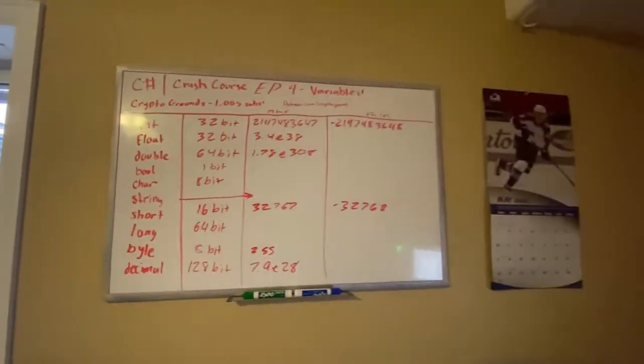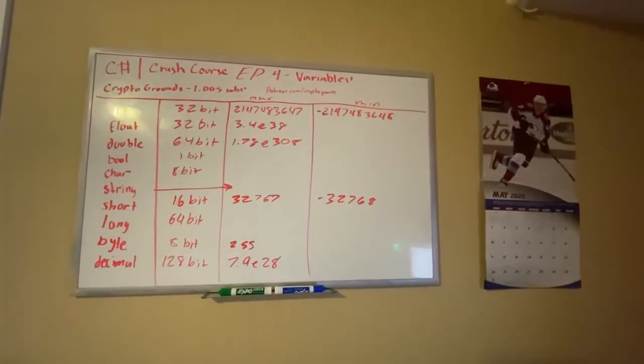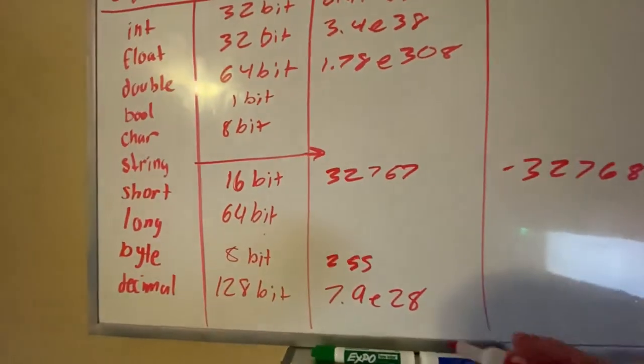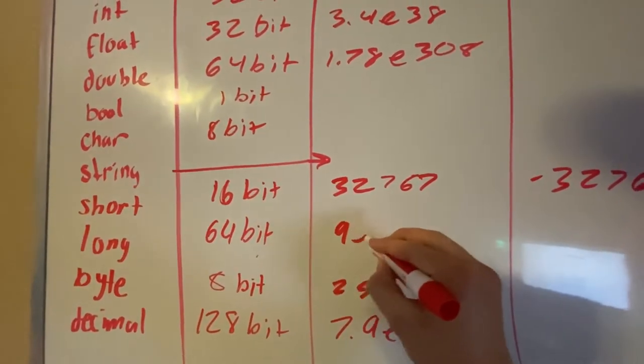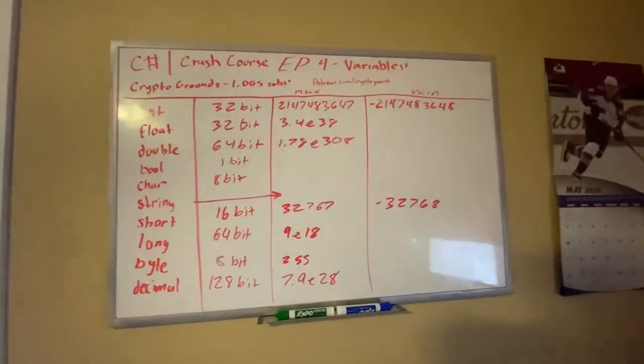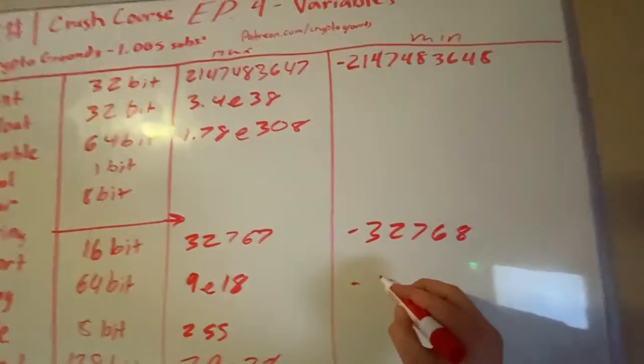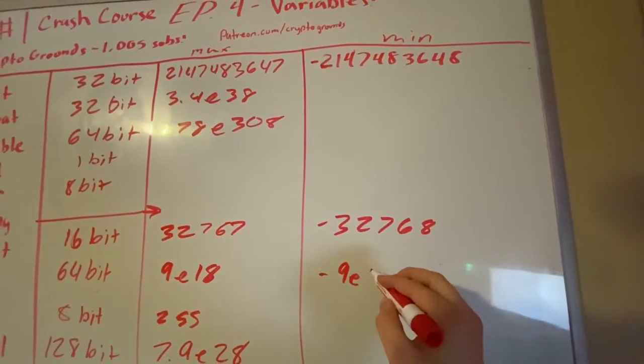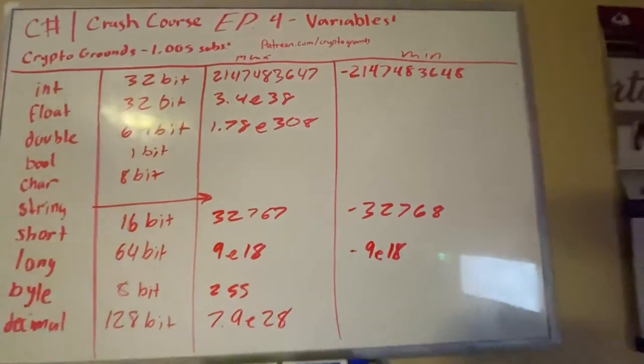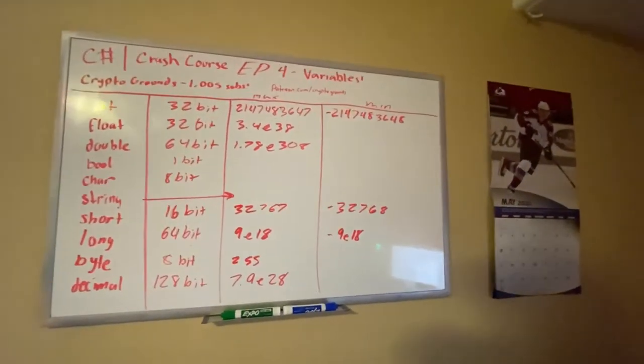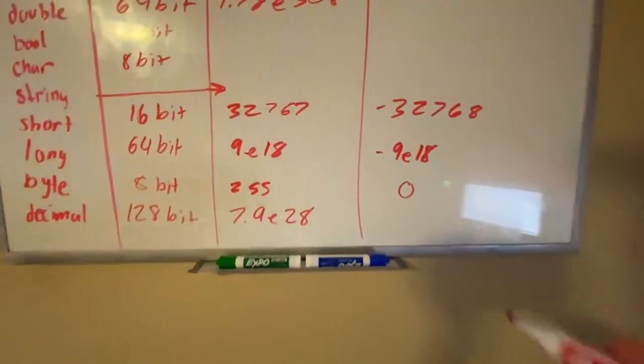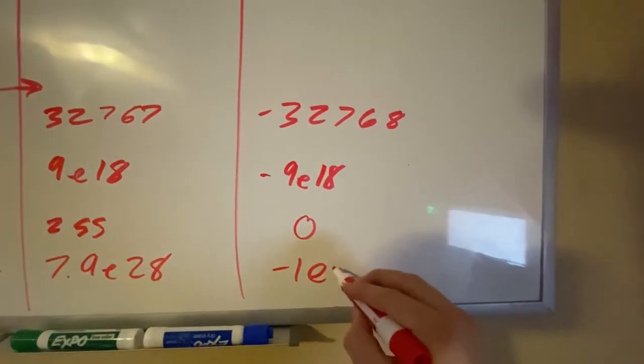All right, so long. Longs are going to be a little bigger. Now I don't really feel like writing this all out, but basically what we can do, we'll just write out the scientific notation: 9e18. I don't want to write out that whole number. And for negative, it's also, or the minimum, it's negative 9e18. Byte's minimum is 0. Decimal has a minimum of negative 1e28.